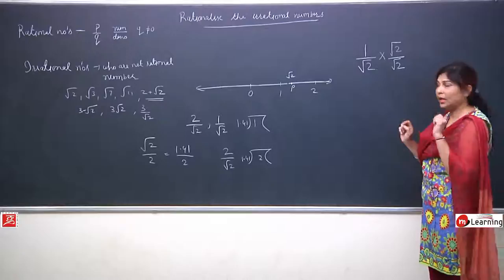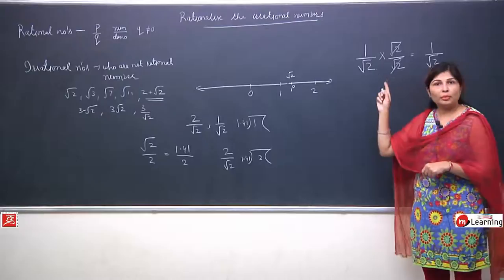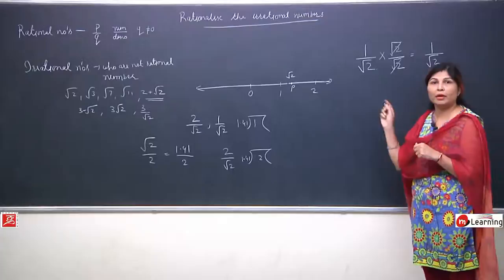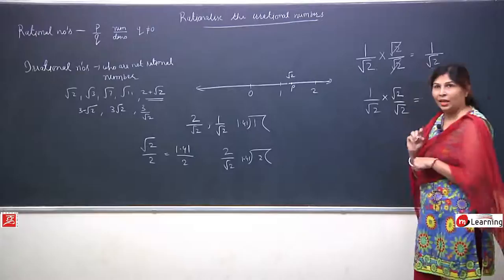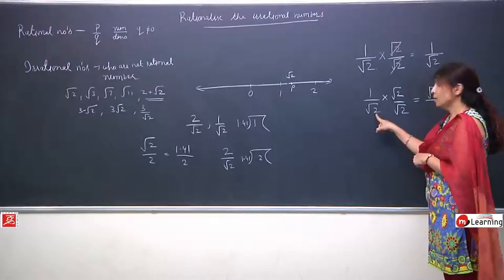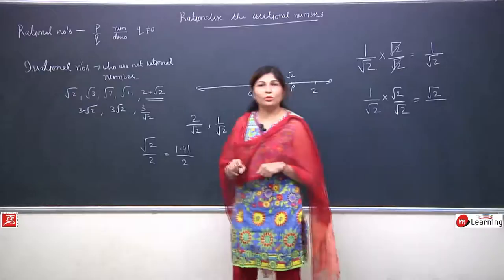Friends, does multiplying and dividing by the same number change the originality of the question? No. If we cancel them, it is again 1 by root 2. So if we multiply any number in the numerator, we must also divide by the same number. So we had 1 by root 2, we multiplied by root 2 and divided by root 2. So 1 multiplied by root 2 gives root 2, and root 2 multiplied by root 2...